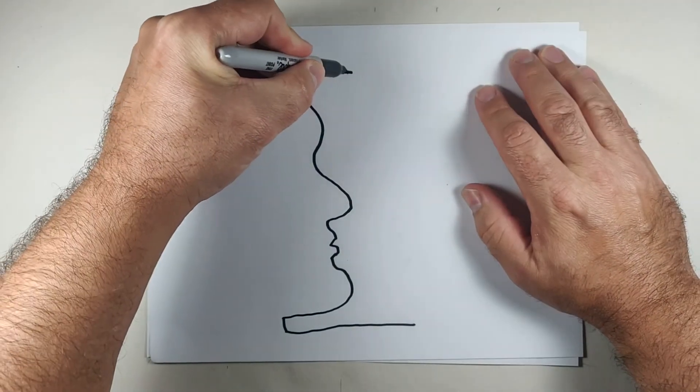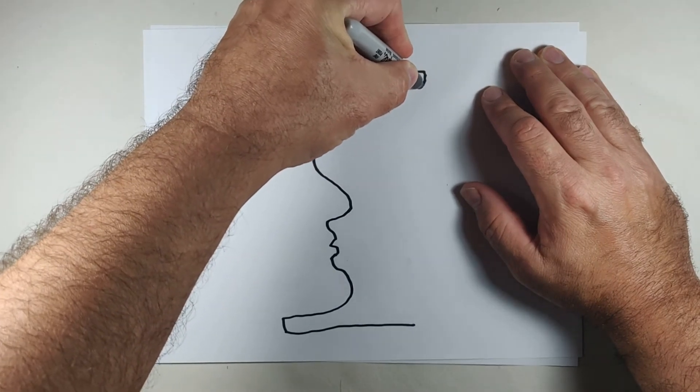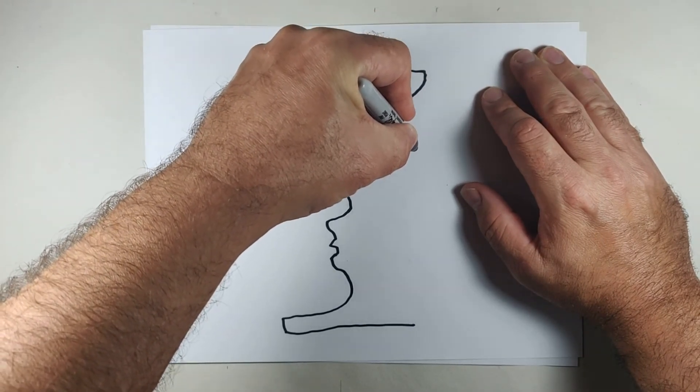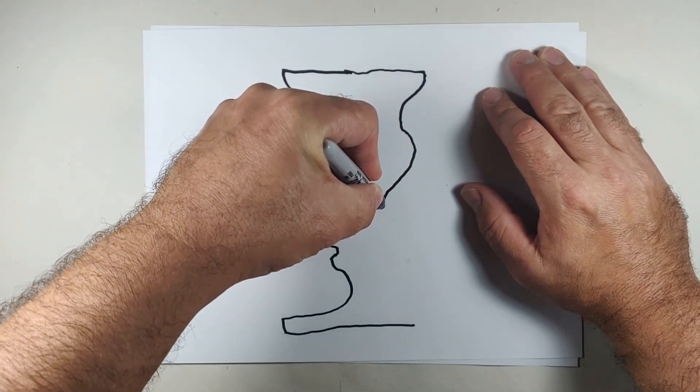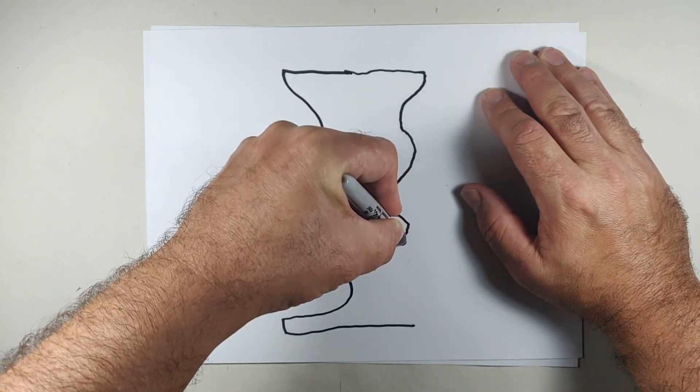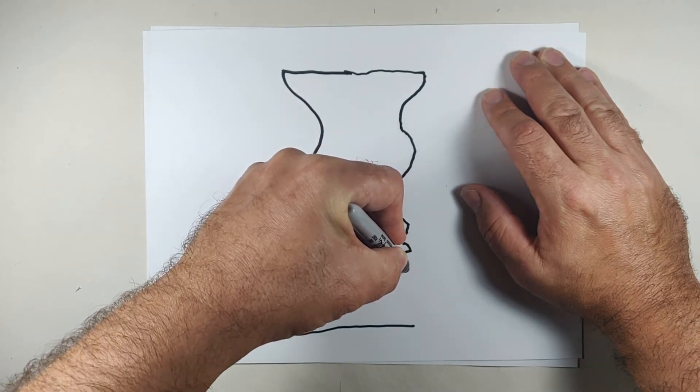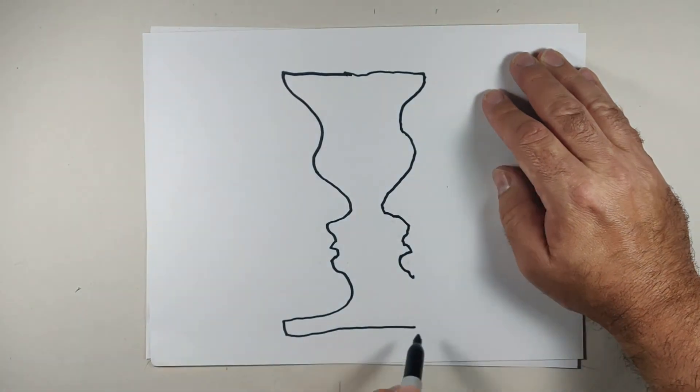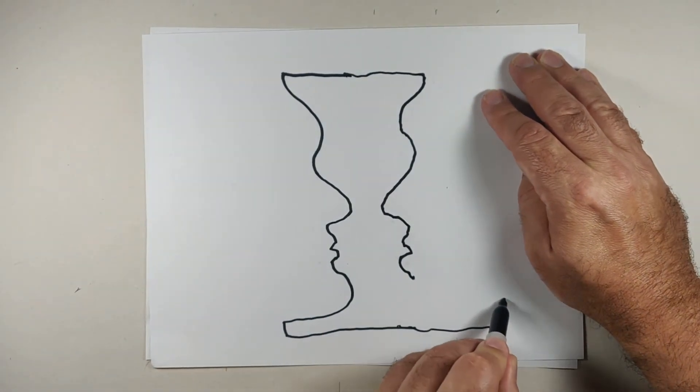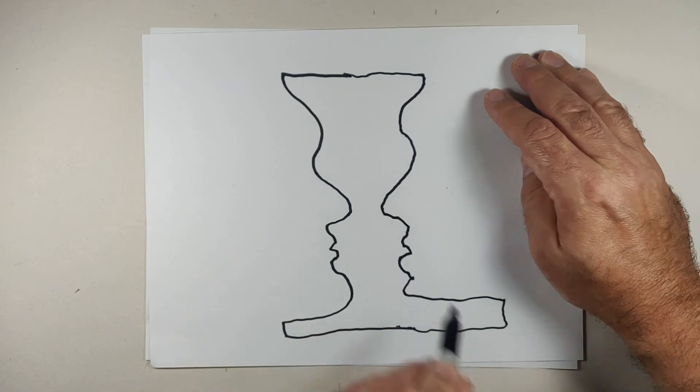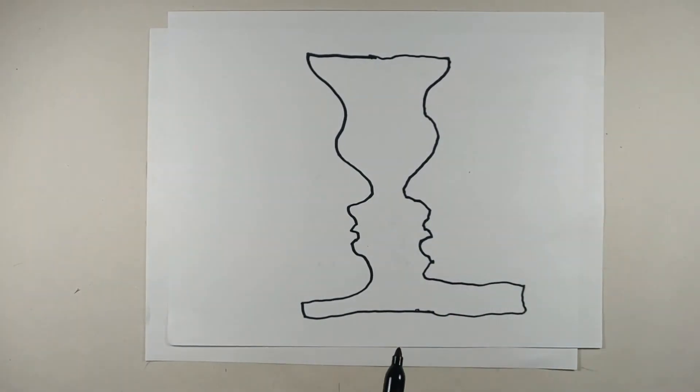I'm going to make it look like a vase. We're going to switch over to our opposite hand. There we go. That side was a little bit better.